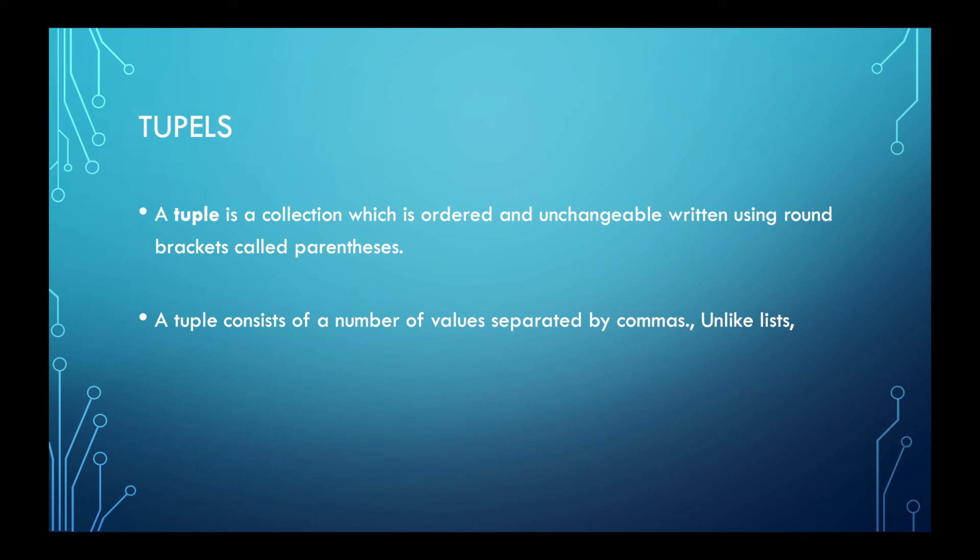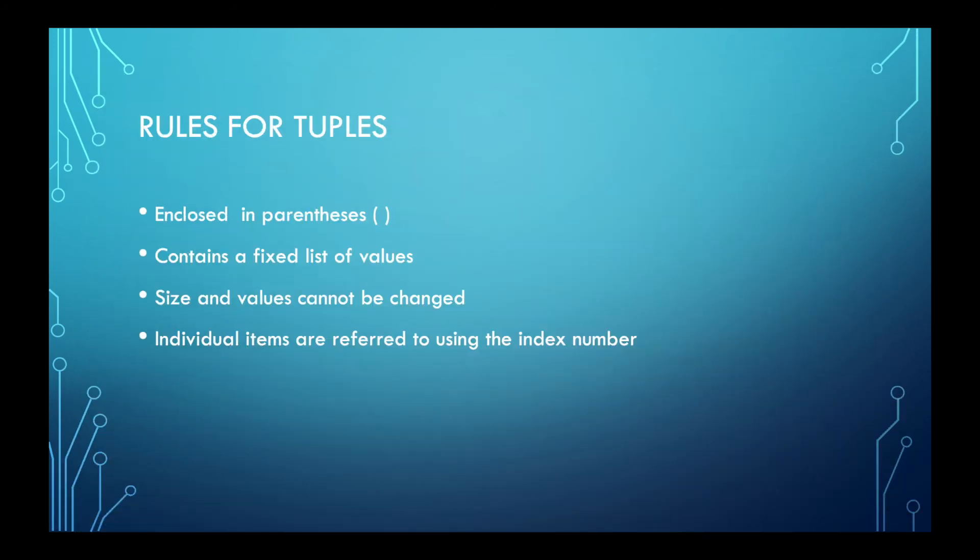Now let's talk a little bit about tuples. Tuple is a collection which is ordered and unchangeable, written using round brackets called the parentheses. And a tuple consists of a number of values separated by commas, unlike lists. So there are also rules for tuples. You always include the tuples in parentheses. If you don't know what parentheses are, they're a round kind of brackets. They're also mentioned here. And tuples usually contain a fixed list of values and they cannot be changed. So size and values cannot be changed. And same as lists, individual items are referred to using the index number.